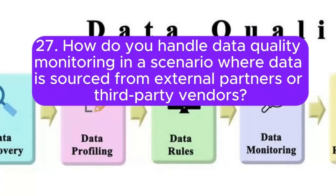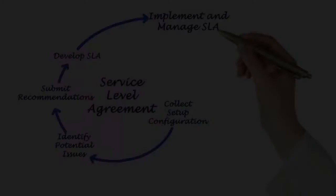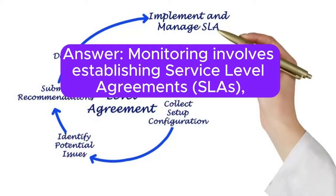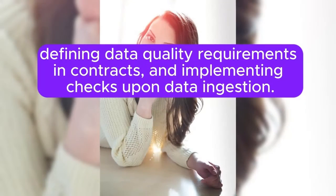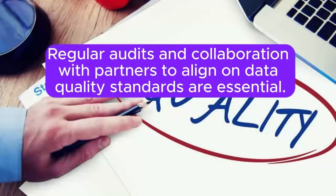27. How do you handle data quality monitoring in a scenario where data is sourced from external partners or third-party vendors? Answer: Monitoring involves establishing service-level agreements, defining data quality requirements in contracts, and implementing checks upon data ingestion. Regular audits and collaboration with partners to align on data quality standards are essential.